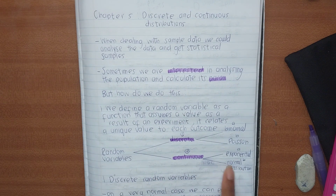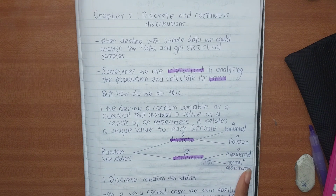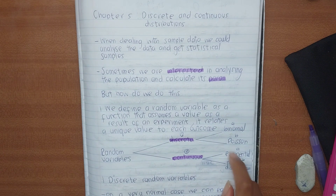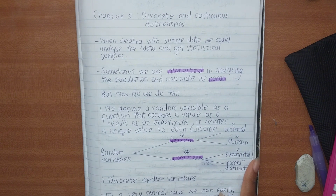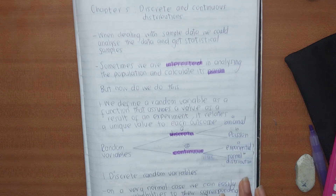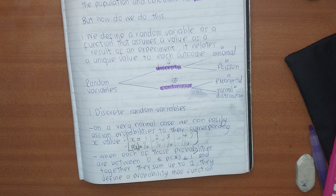Under the continuous random variable we have the exponential distribution and the normal distribution. In this video I'm going to be focusing on binomial, Poisson, and exponential. I'll be making a separate video on counting principles, so please make sure you've subscribed, liked, and commented below.